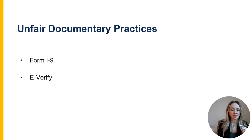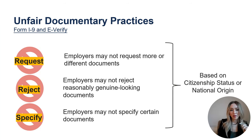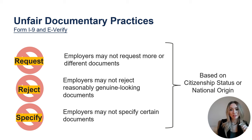The most common type of discrimination IER sees is unfair documentary practices, and many people don't realize it's illegal. Unfair documentary practices refer to discrimination based on citizenship status or national origin that often occurs when getting proof of someone's permission to work in the United States, such as in the Form I-9 and E-Verify processes. They occur when an employer requests more or different documents than are required, rejects documents that appear genuine, or specifies certain documents from an employee based on citizenship status or national origin. A common example is an employer who says, 'Oh, you're a permanent resident? Well, then I need to see your green card.'